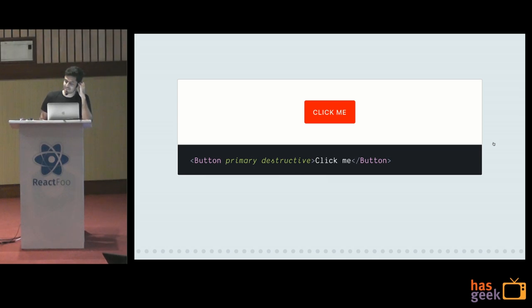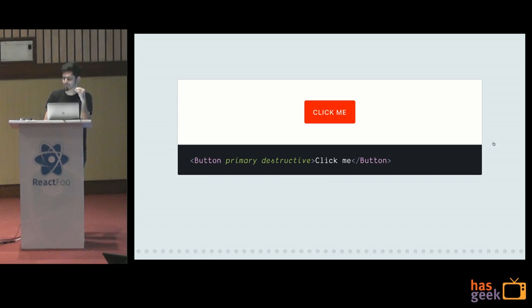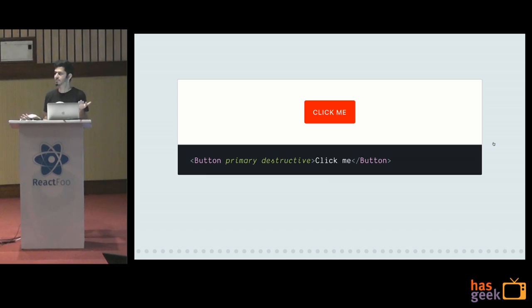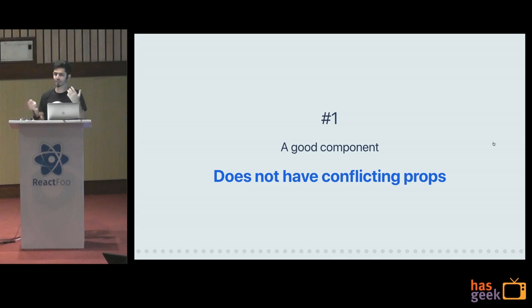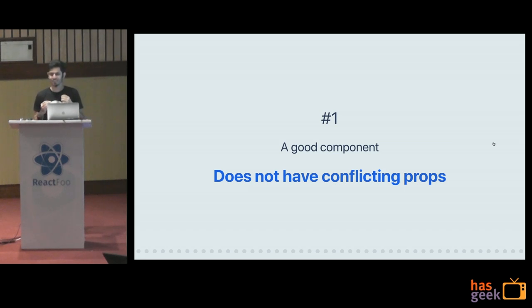Since then I've come around to this concept. We added a prop type validation that gave a warning saying you can't use primary and destructive at the same time — make up your mind, pick one. I was very proud of that custom prop type validation. But since then I've come around: a good component should not have conflicting props. The whole idea is that you want the developer who uses this — your fellow developers — to not have to think about what will happen. The API should be more obvious, it should promote the user to get into a pit of success, where the API helps you do the right thing.